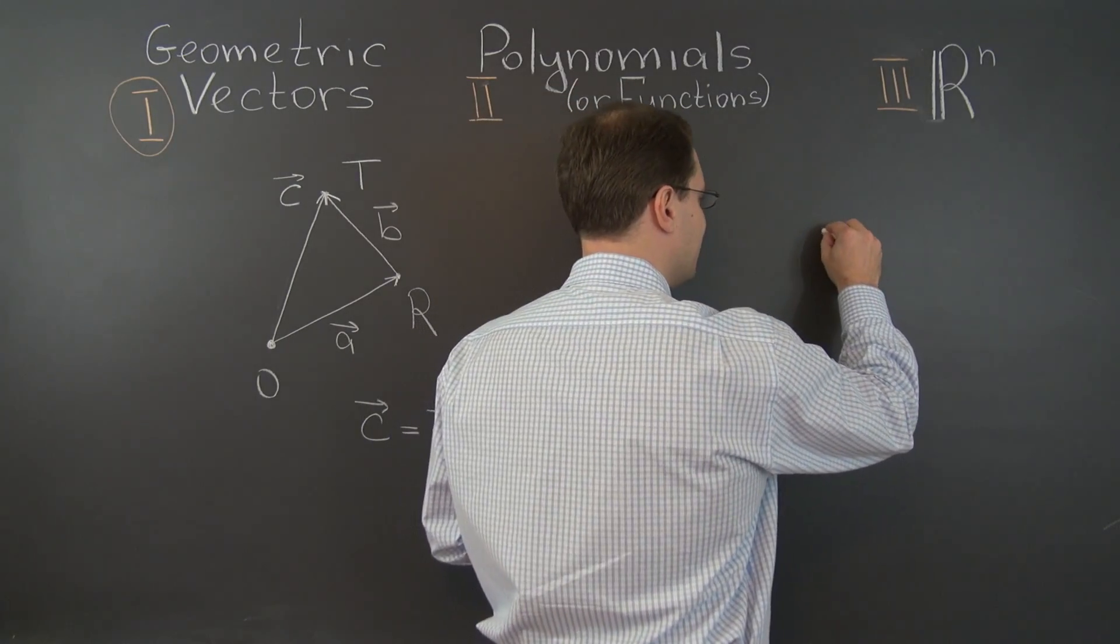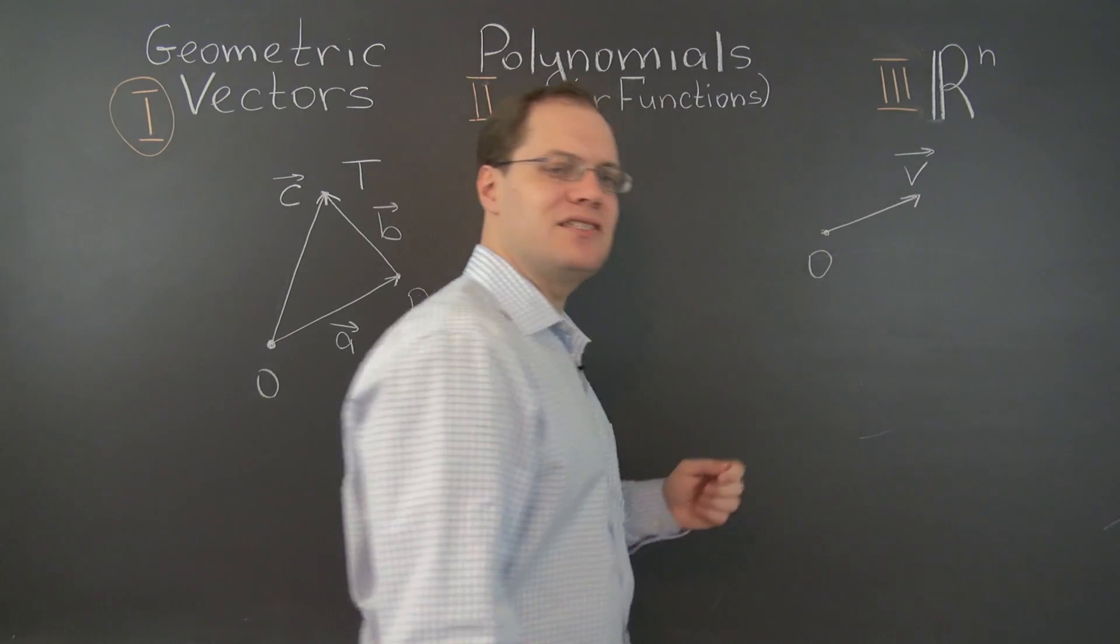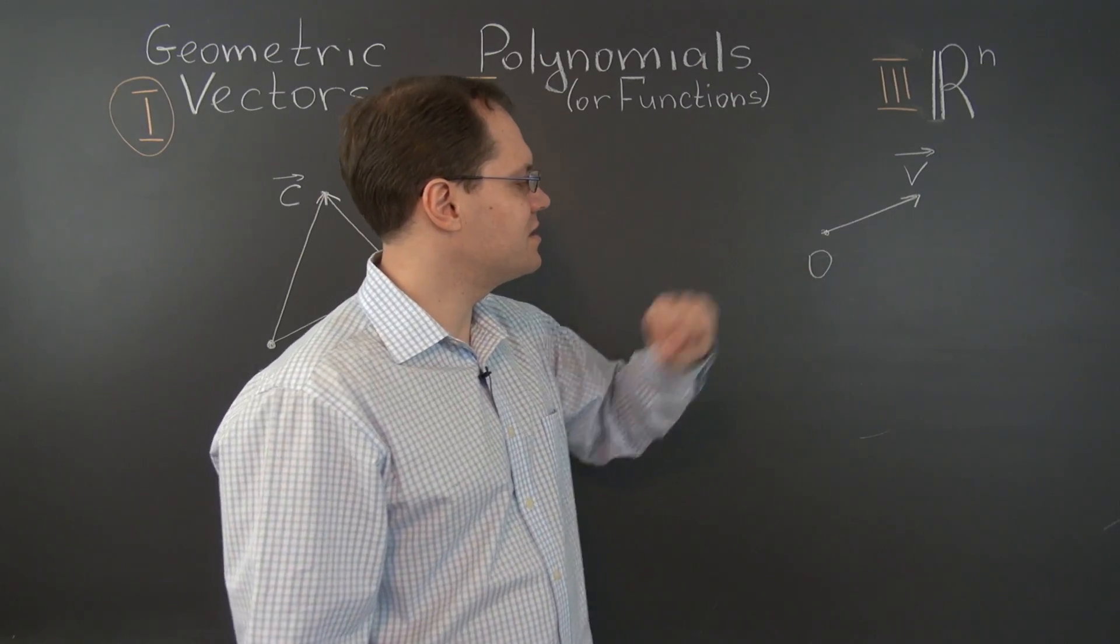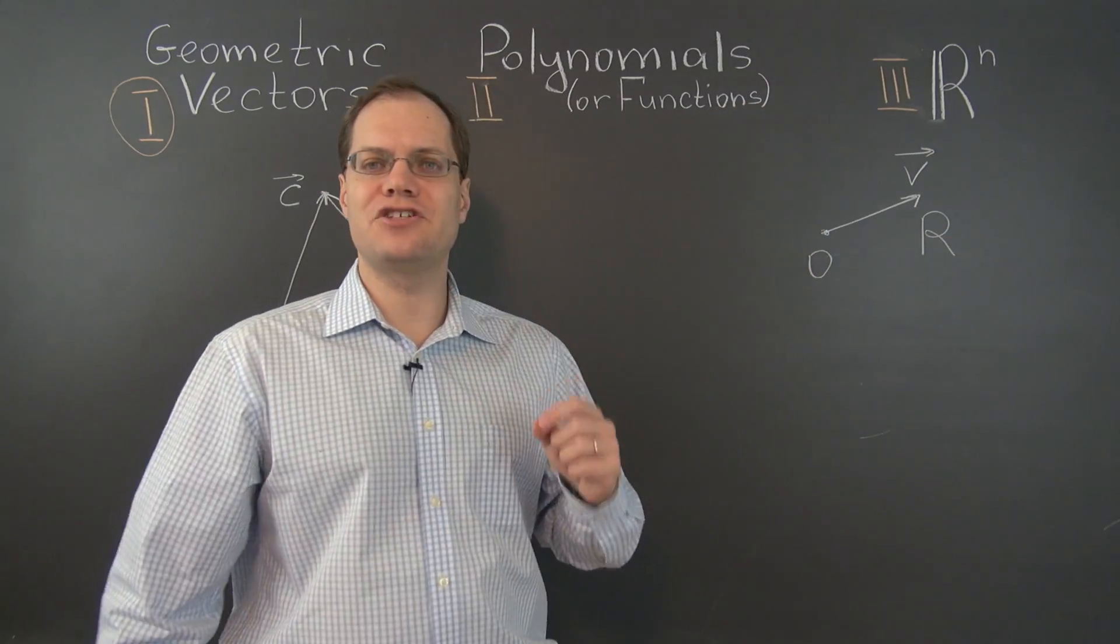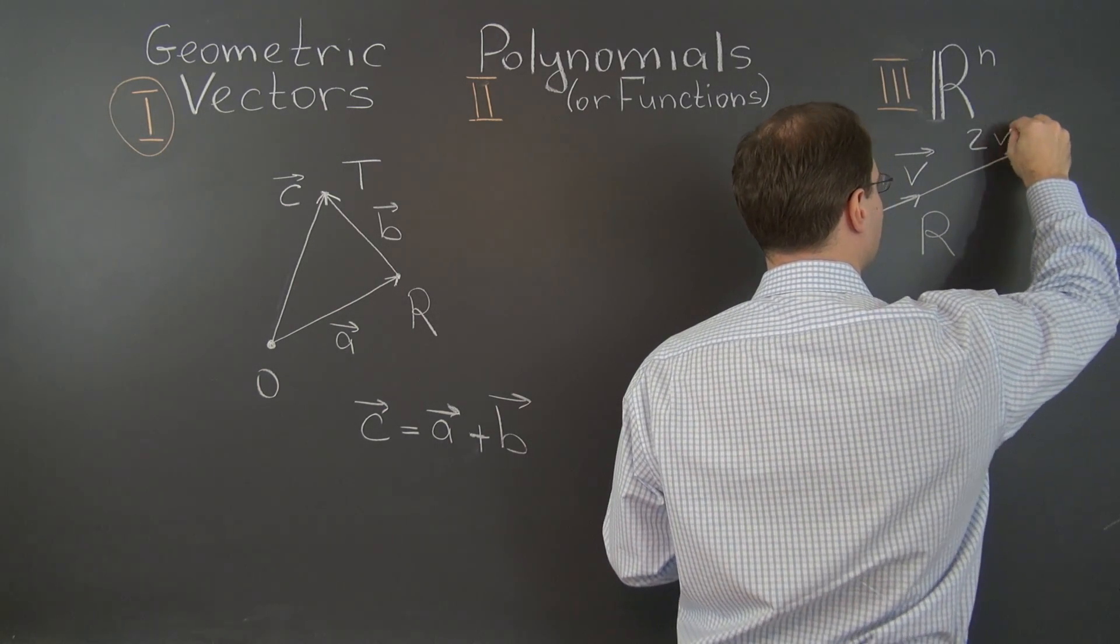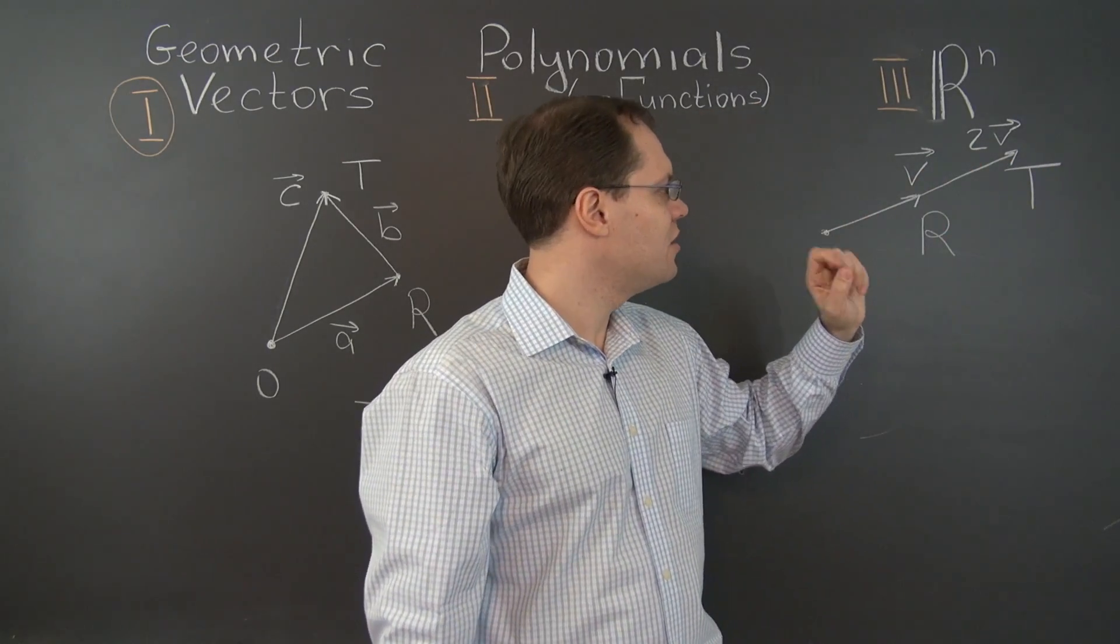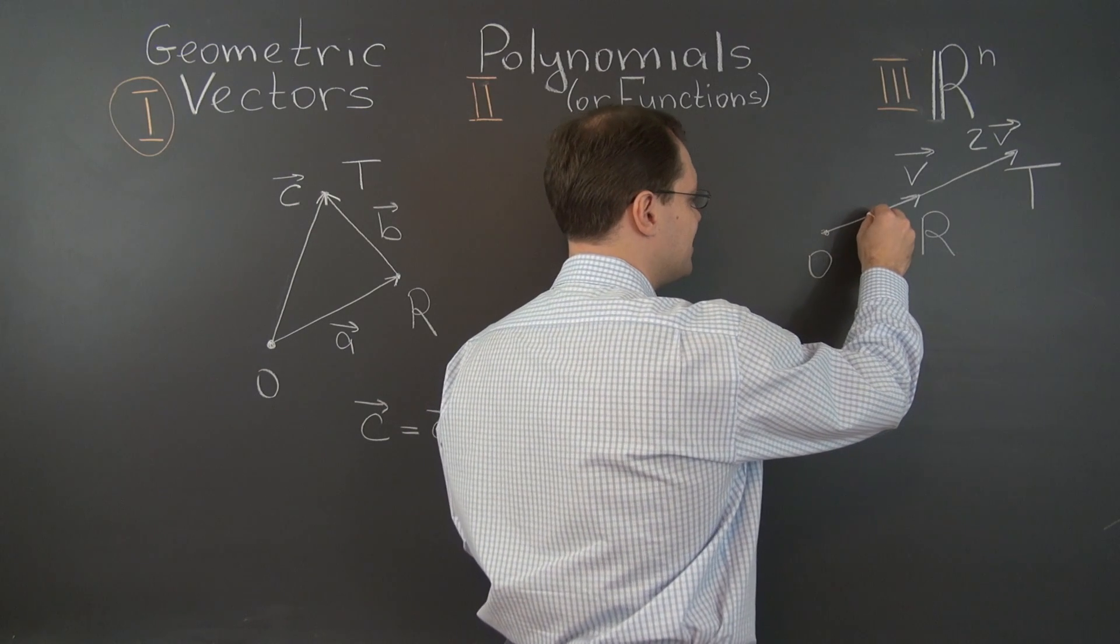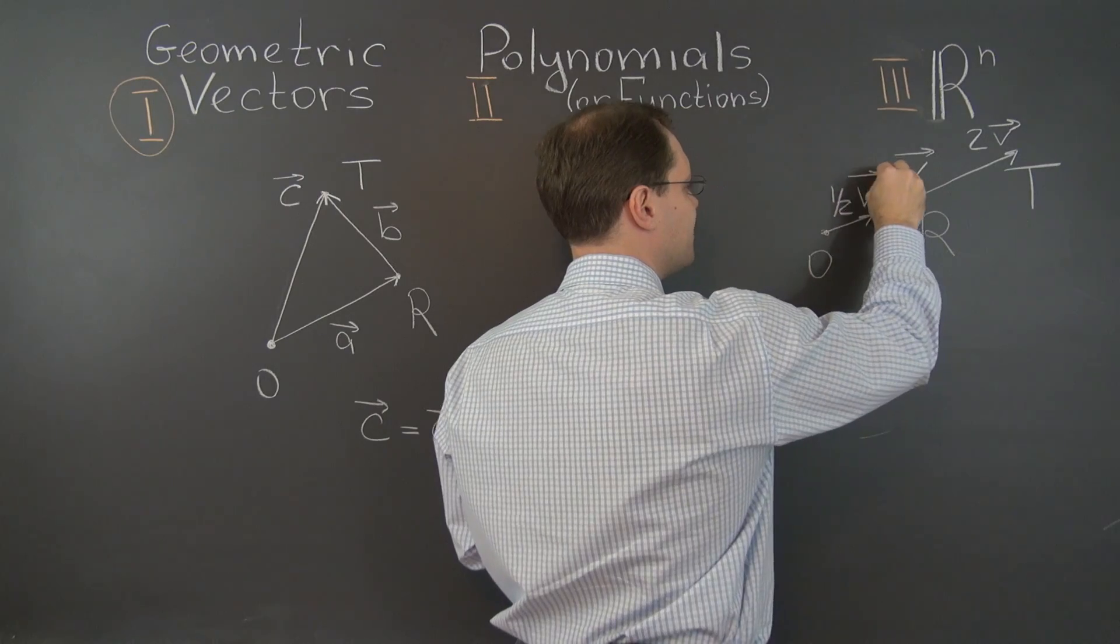If we have a vector V right here, then to multiply it by a number, we have to keep its direction the same, but change its length according to that number. So if this is the vector V connecting the village O to the village R, then the vector 2V has the same direction but twice the length. So it might point to a village T that's in the same direction from the village O as the village R, but twice as far. There could be another village in the same direction, but half the distance to the village R, and that would be associated with the vector 1 half V.